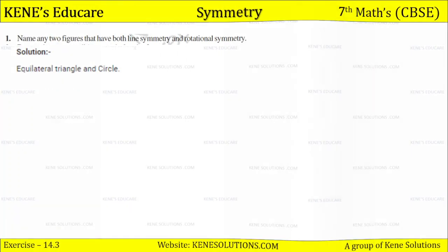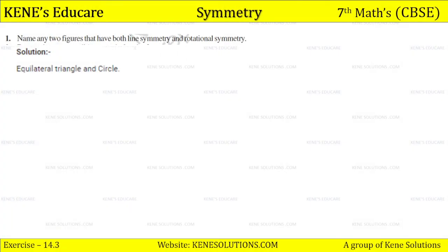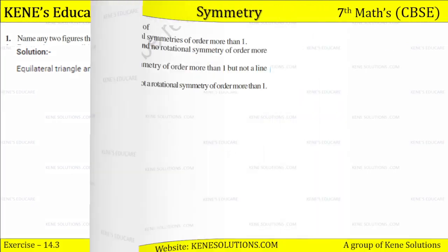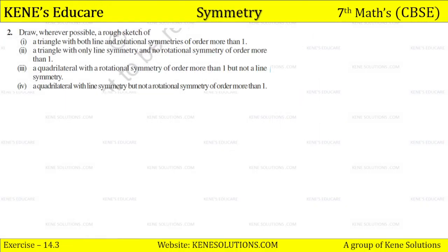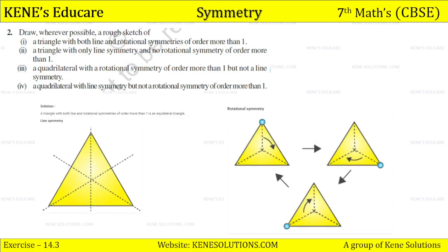So students, here if you have an equilateral triangle and circle as examples, you can also see the square as an example. Question number two: draw, wherever possible, a rough sketch of a triangle with both line and rotational symmetries of order more than one. Here you can make a rough diagram — it is an equilateral triangle.